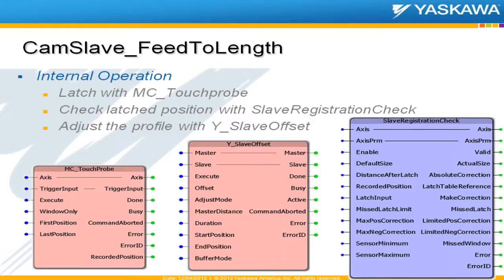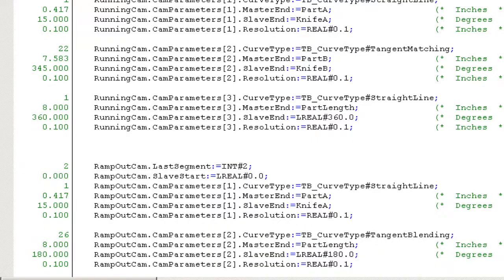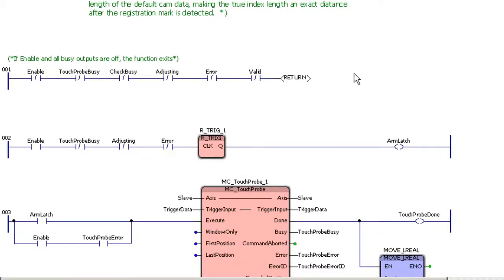Why is it a slave offset and not a cam shift? That's because we are in control of the product, which is a slave to some other master. So we need to use the slave offset instead.